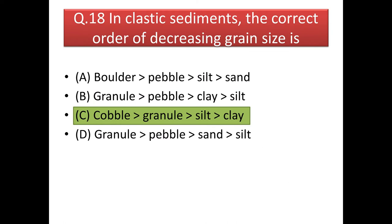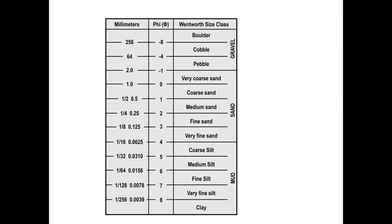Next question: in clastic sediments the correct order of decreasing grain size is? The correct order is cobble greater than granule, greater than silt, and greater than clay. There are mainly three grain types: gravel (coarse grain), sand (medium grain), and mud (fine grain), with their subdivisions respectively.